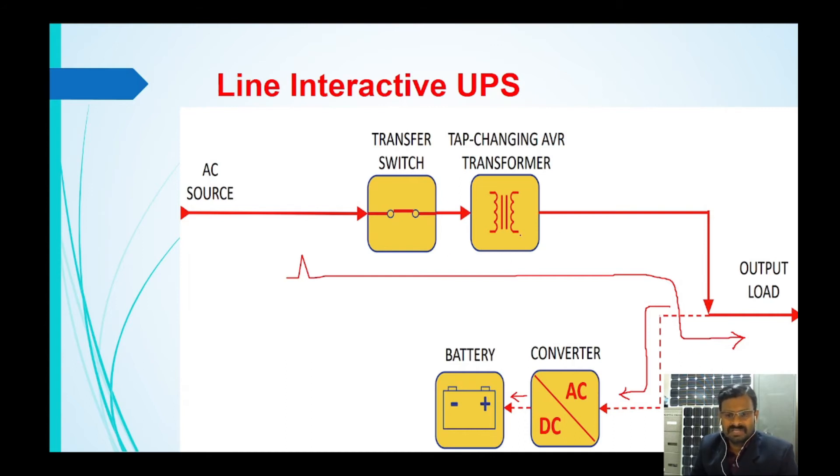What is the role of this tap changing AVR transformer during this mode? Whatever voltage fluctuations coming from the input, since it is a tap changing transformer, the taps can be changed in accordance with the AC input. If it is high voltage the tap can be reduced, or if it is low voltage the tap can be increased, so that the output voltage to the load will be maintained constant.